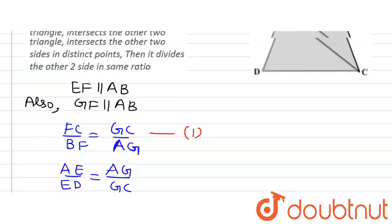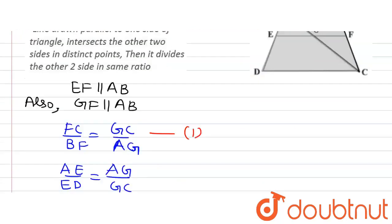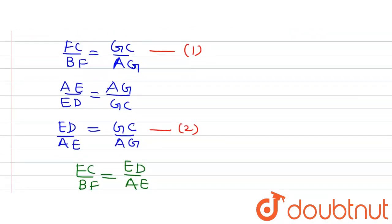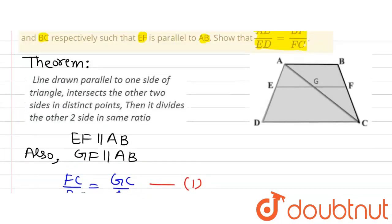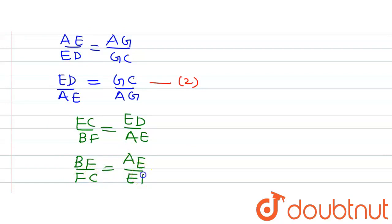We were required to prove AE divided by ED is equal to BF divided by FC, which is simply the reciprocal of what we derived. Writing it as BF divided by FC is equal to AE divided by ED means the same thing, and this is exactly what we were required to prove.